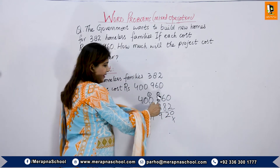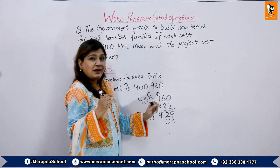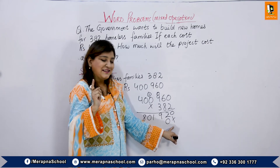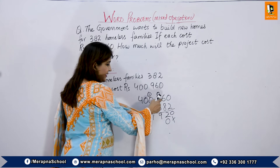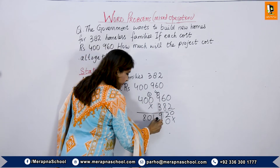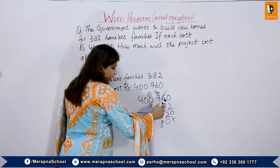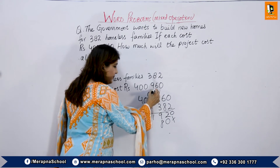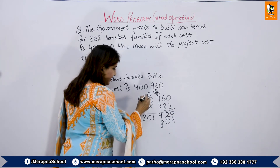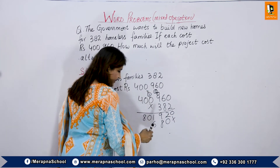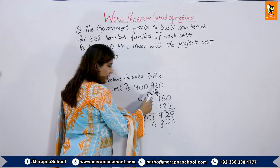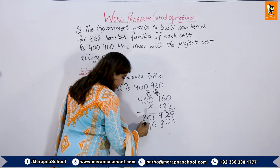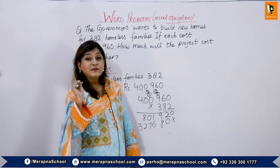Now multiply by 8. We put one cross to mark that one multiplication is done. 8 times 0 is 0. 8 times 6 is 48 — write 8, carry 4. 8 times 9 is 72, plus 4 is 76 — carry 7, write 6. 8 times 0 is 0, plus 7 is 7. 8 times 4 is 32. Second partial product: 3,207,680.